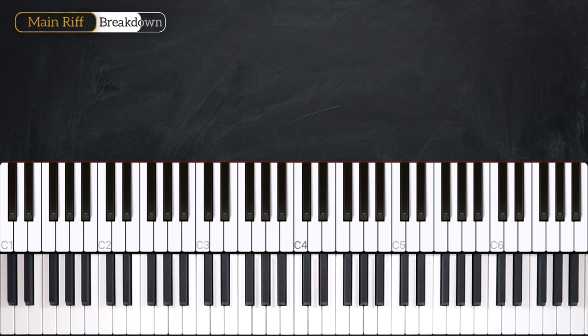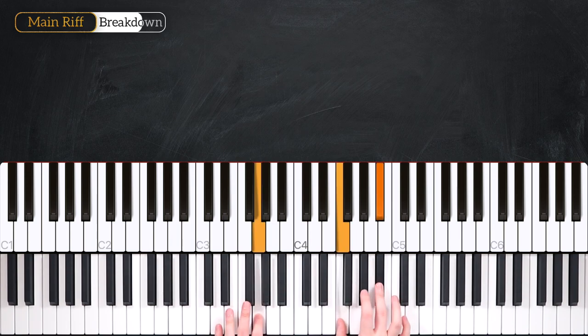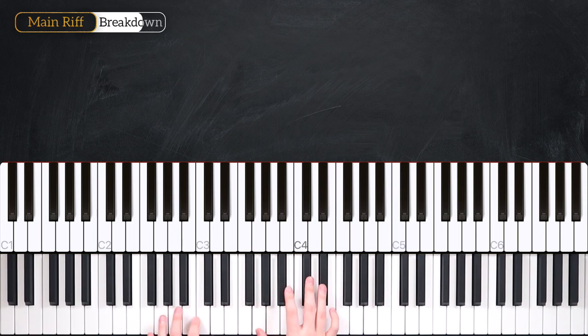We shift back down to that C minor chord. Let me show you that 4th bar one more time. Again at full speed. Just like that. And that leads us back into the beginning of the loop.